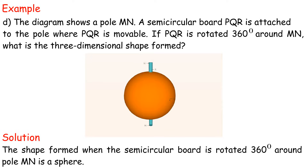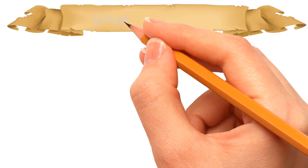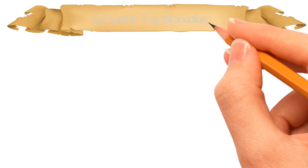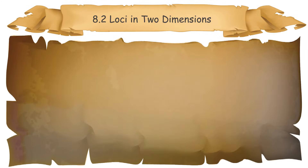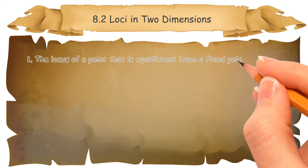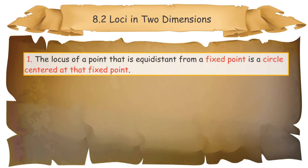8.2 Loci in Two Dimensions. In general, there are five points. One: the locus of a point that is equidistant from a fixed point is a circle centered at that fixed point.